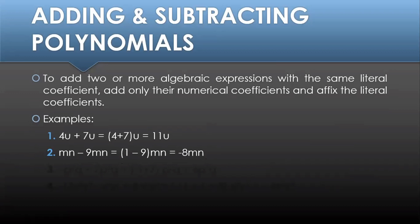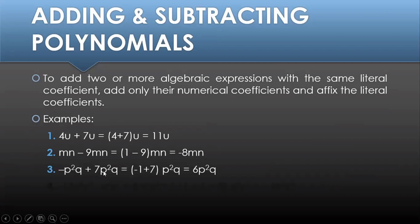Next example, we have negative p squared q plus 7p squared q. In the first term we have negative 1 as the coefficient. So negative 1 plus 7 gives us 6, and the answer is 6p squared q.